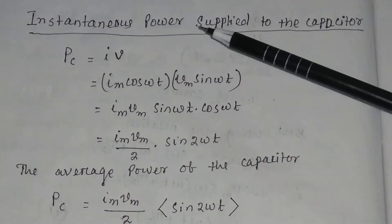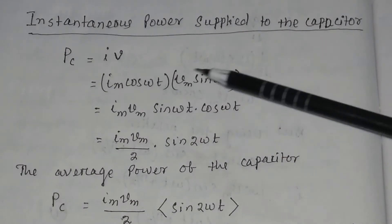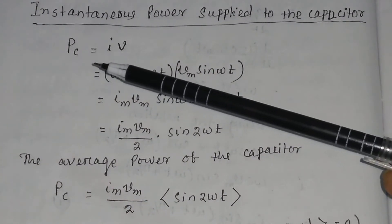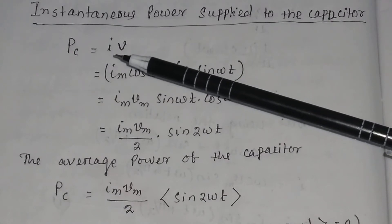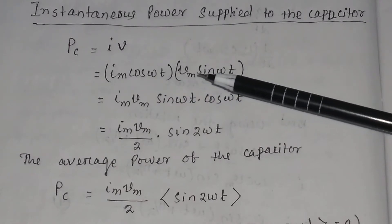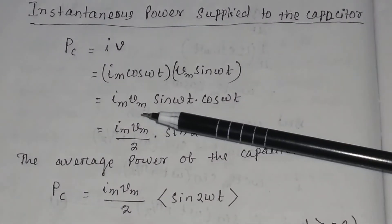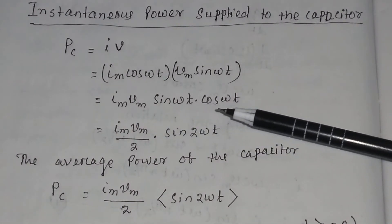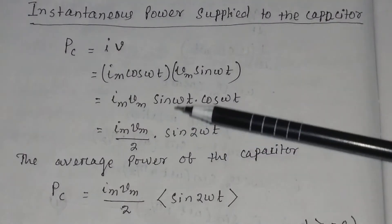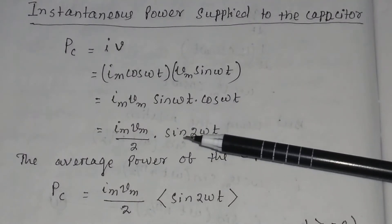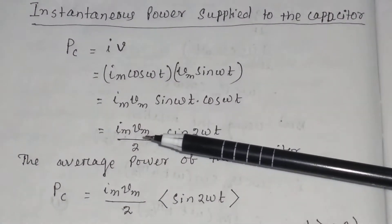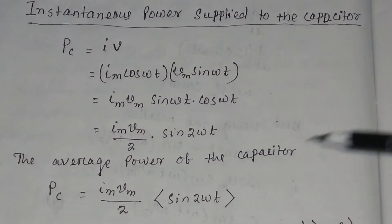Now let us find the instantaneous power supplied to the capacitor. The power supplied to the capacitor Pc is equal to the product of current and voltage. The current I = Im cos(ωt) and the voltage is Vm sin(ωt). So Pc = Im × Vm × sin(ωt) × cos(ωt). From trigonometry, 2 sin θ cos θ = sin 2θ, so sin(ωt) cos(ωt) = sin(2ωt)/2. Therefore, Pc = (Im × Vm / 2) × sin(2ωt).